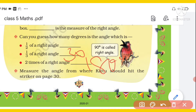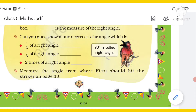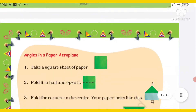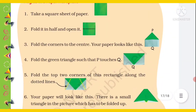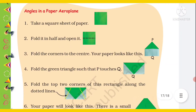Next, measure the angle from where Kittu should hit the striker on page number 30. You have to measure that angle, and then you will find out how many degrees that angle is.